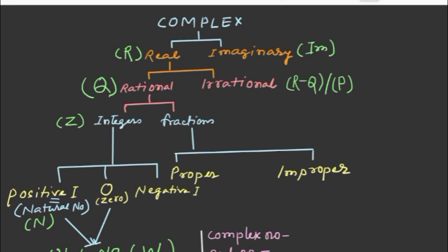So if you want to describe rational numbers, you can say rational numbers include 1, 2, and fractions like 1 by 2.